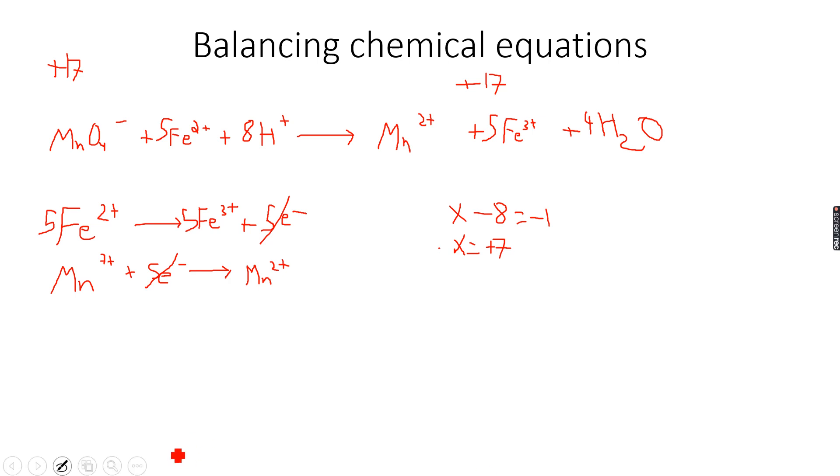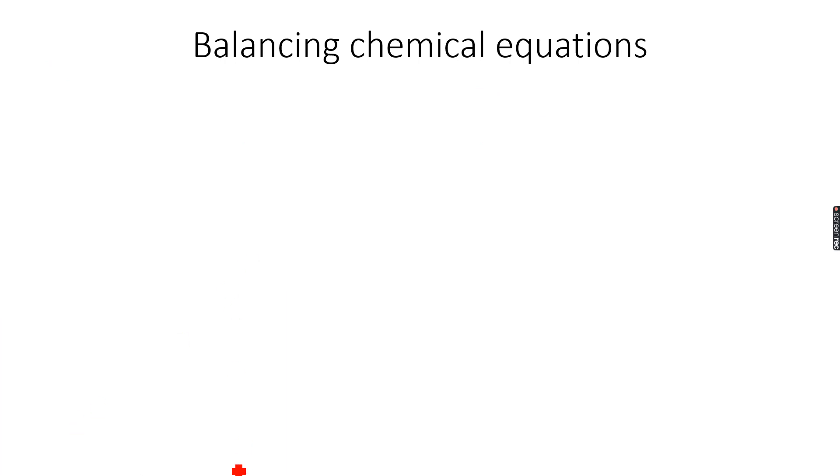So our last bit for this topic, for this balancing chemical equations topic is ionic equations. How do we write ionic equations? So let's say that there is a reaction which is HCl plus NaOH giving NaCl plus H2O. So this is a neutralization reaction. Now this is the balanced equation for the neutralization reaction, this is a balanced equation.